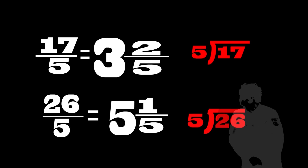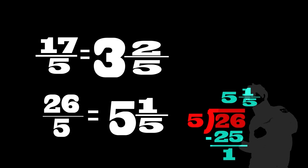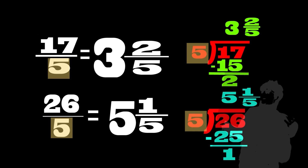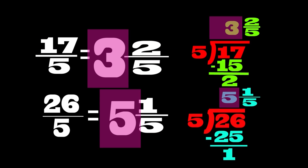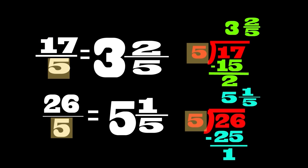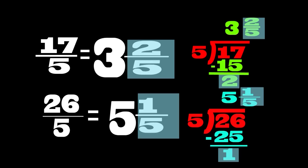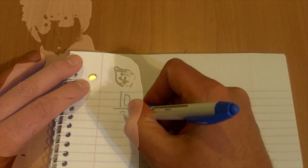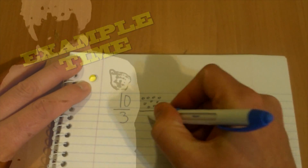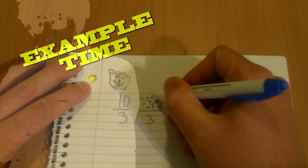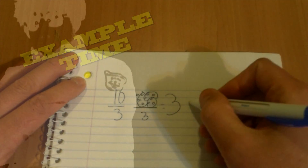The mixed number five — the mix of numbers are just like division. Can you show me how? Dividend and divisor, remainder, and quotient. Example time: put 10 thirds into mixed form.